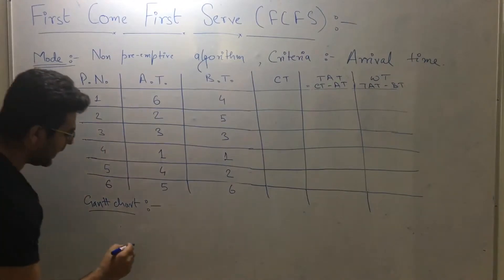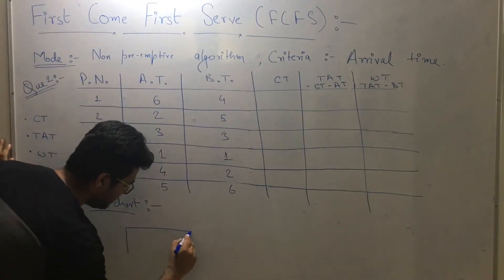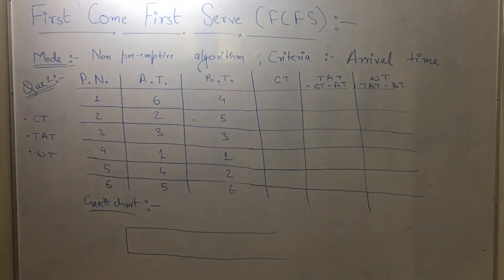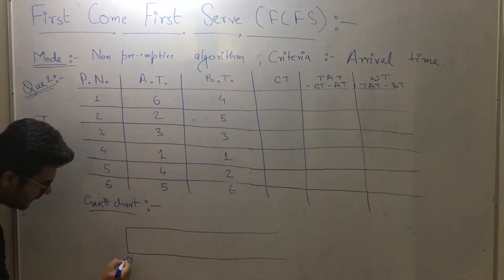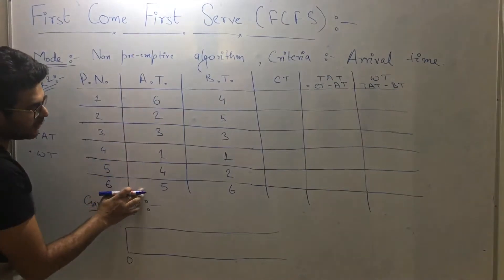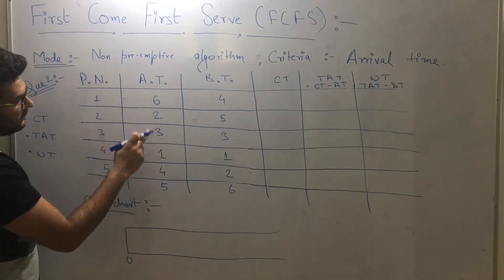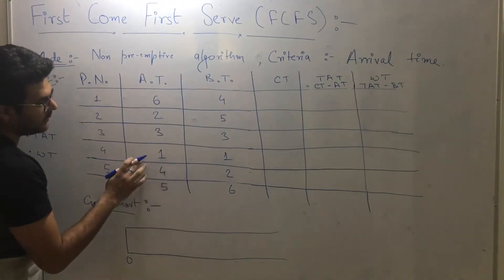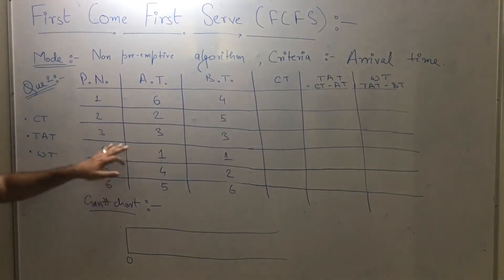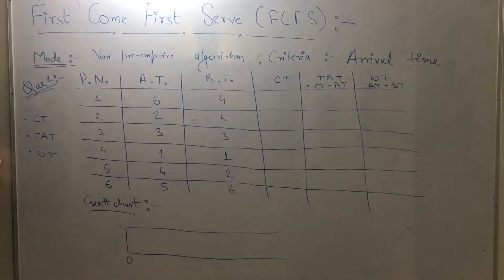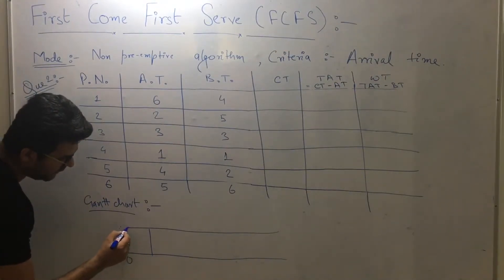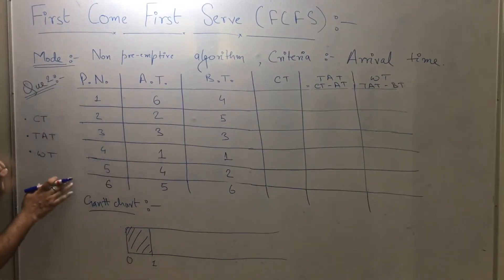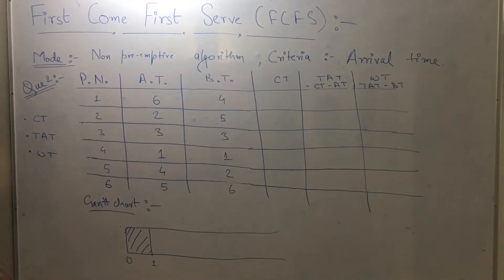In order to solve this problem we will again create a Gantt chart. The Gantt chart always starts at time zero. Now check in the question whether there is any process arriving at time zero. The first process arriving is process number four with arrival time one — there is no process arriving at time zero. So we cannot schedule any process between zero and one unit of time.